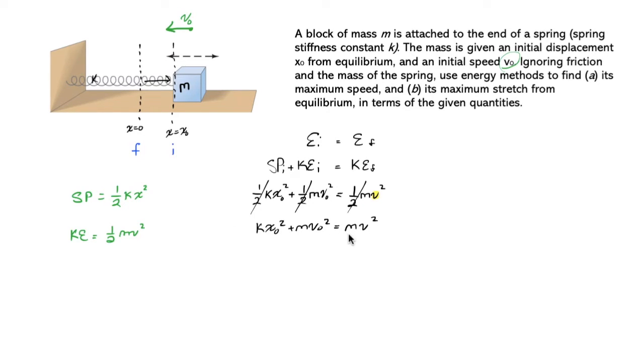We may divide both sides by m. Dividing each part of the left individually by m, we find k x naught squared over m plus just v naught squared, because those m's would cancel. That would be equal to v squared.